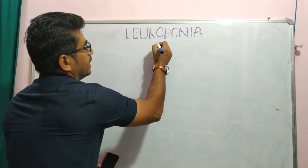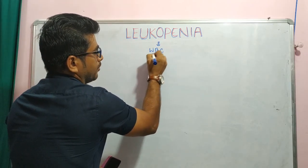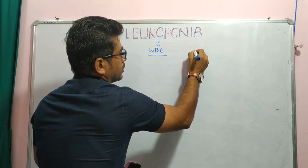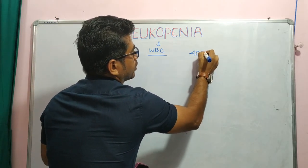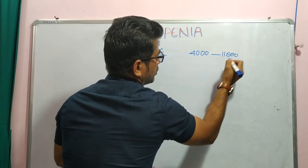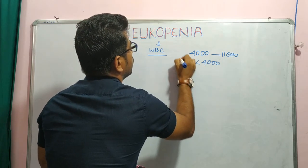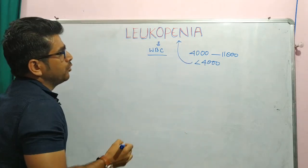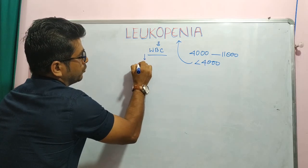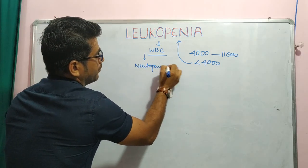Leukopenia is a decrease in the number of WBC. The normal range of leukocytes is 4000 to 11000. If the leukocyte count decreases to less than 4000, we call it leukopenia. Leukopenia comprises neutropenia and granulocytopenia.